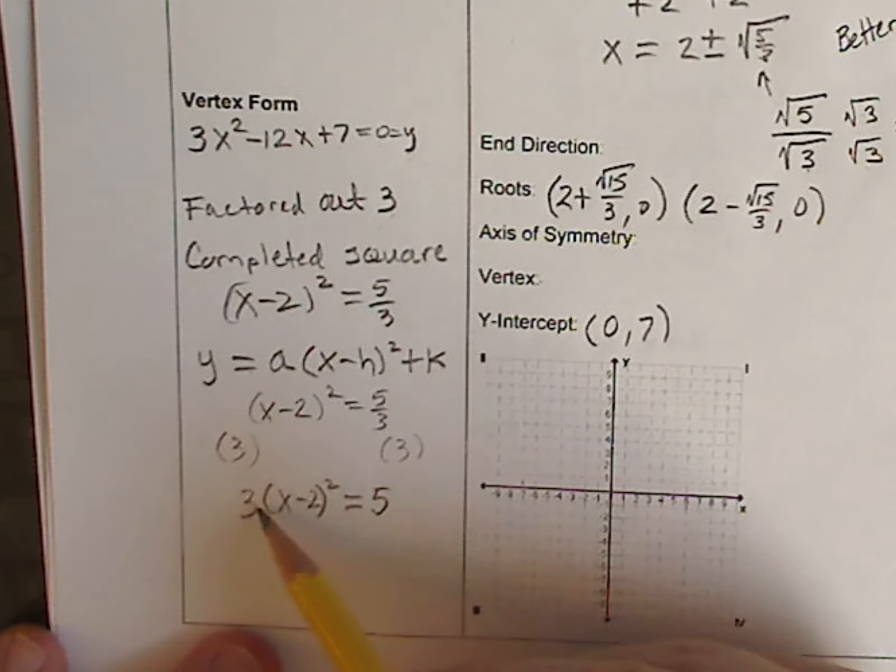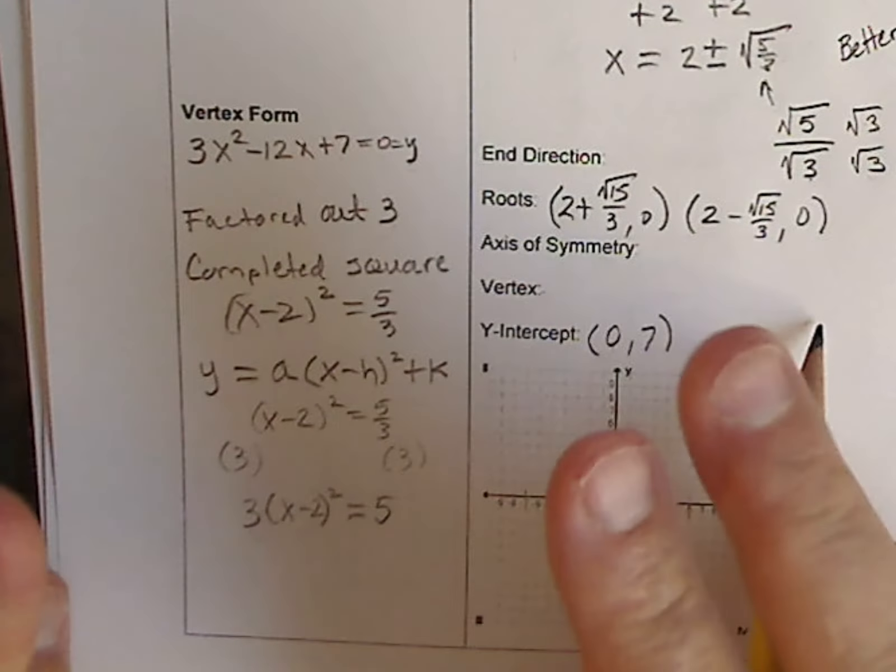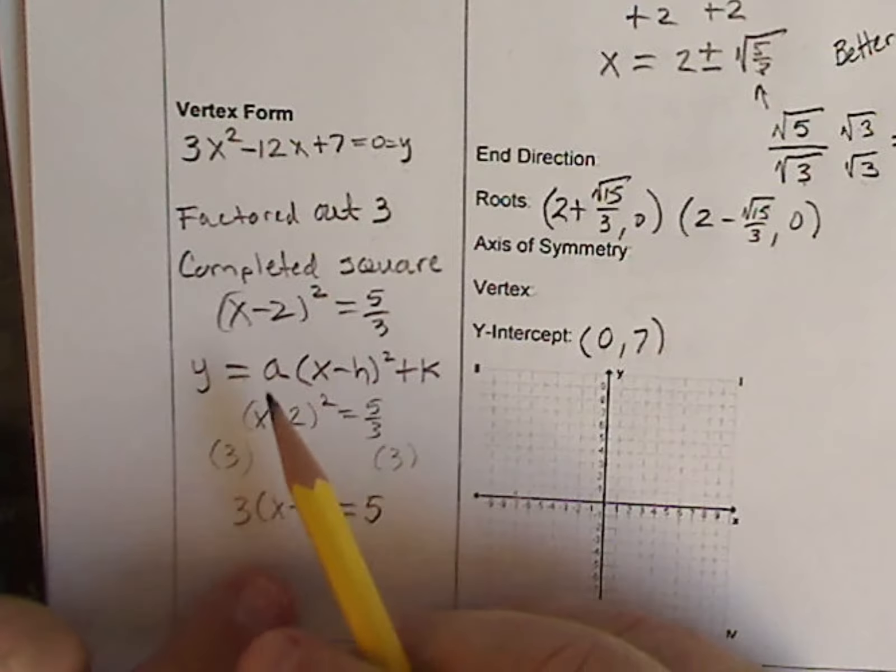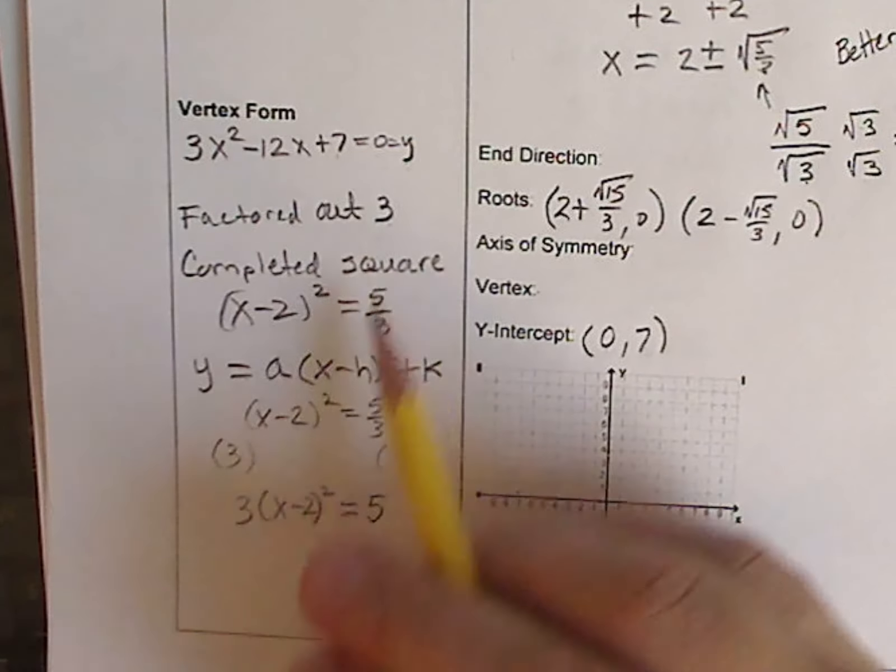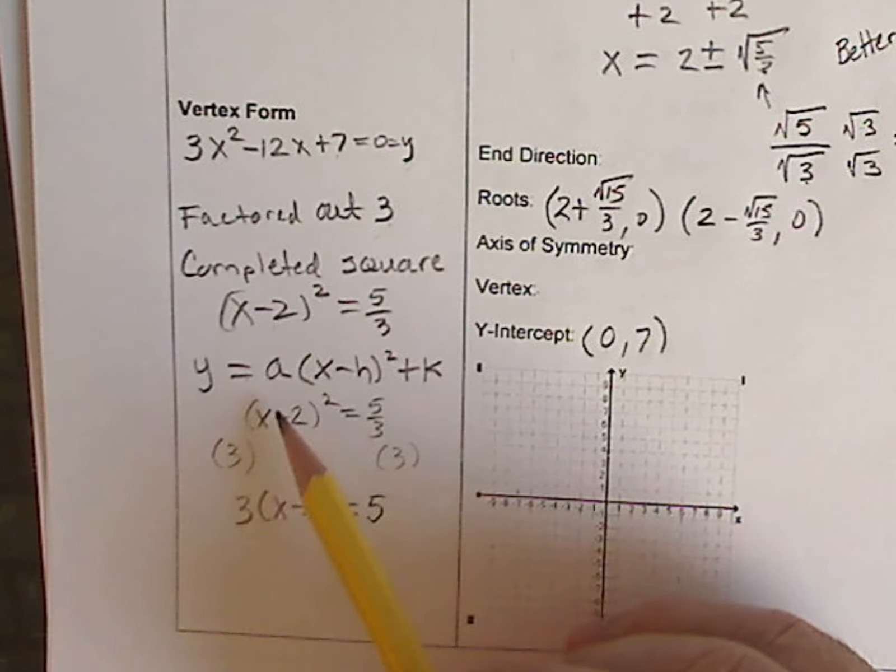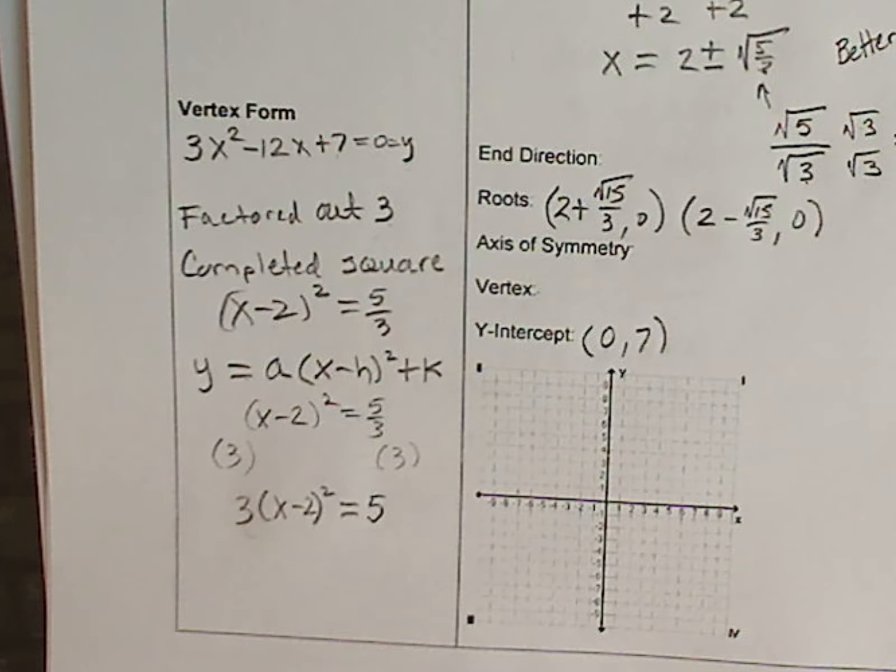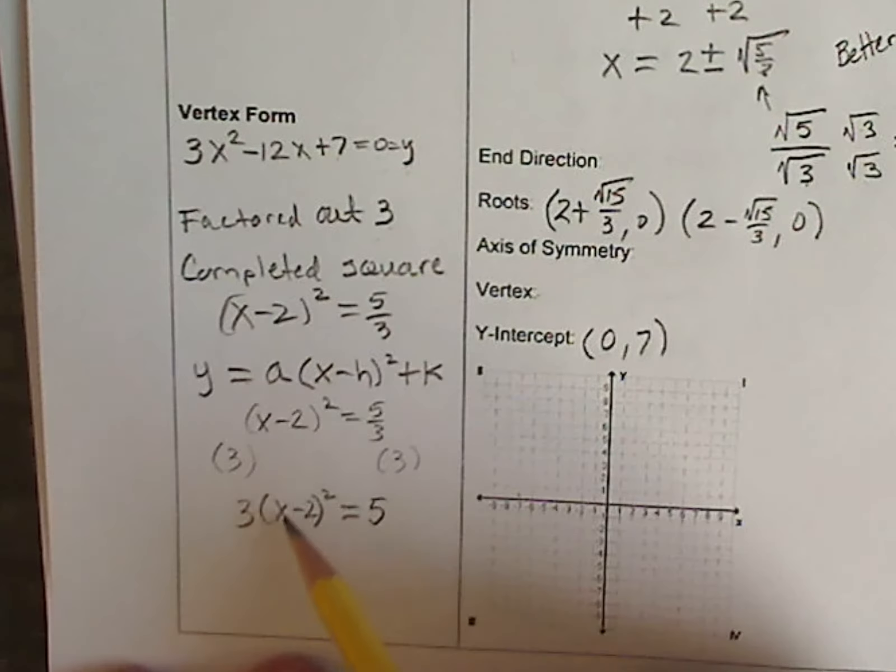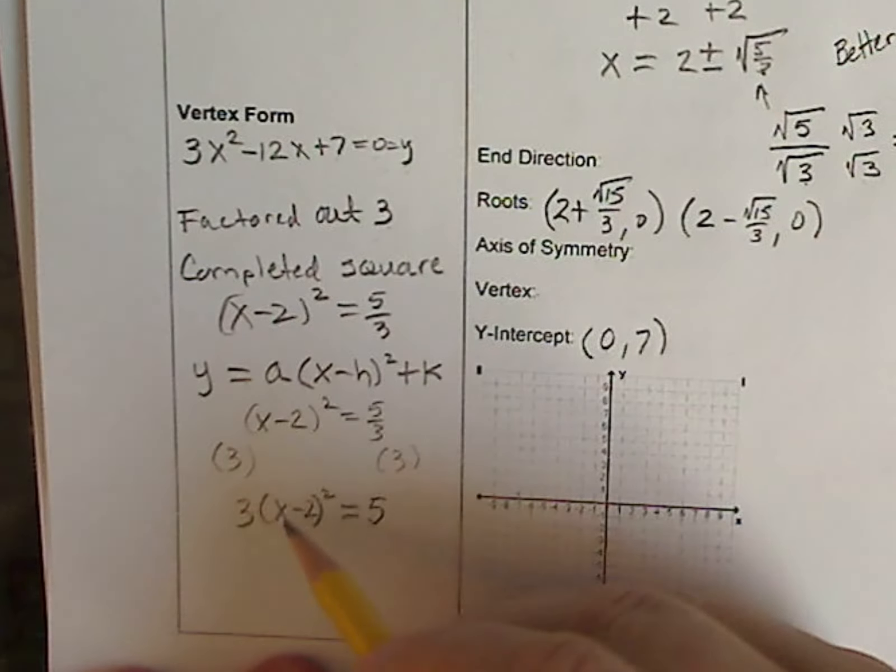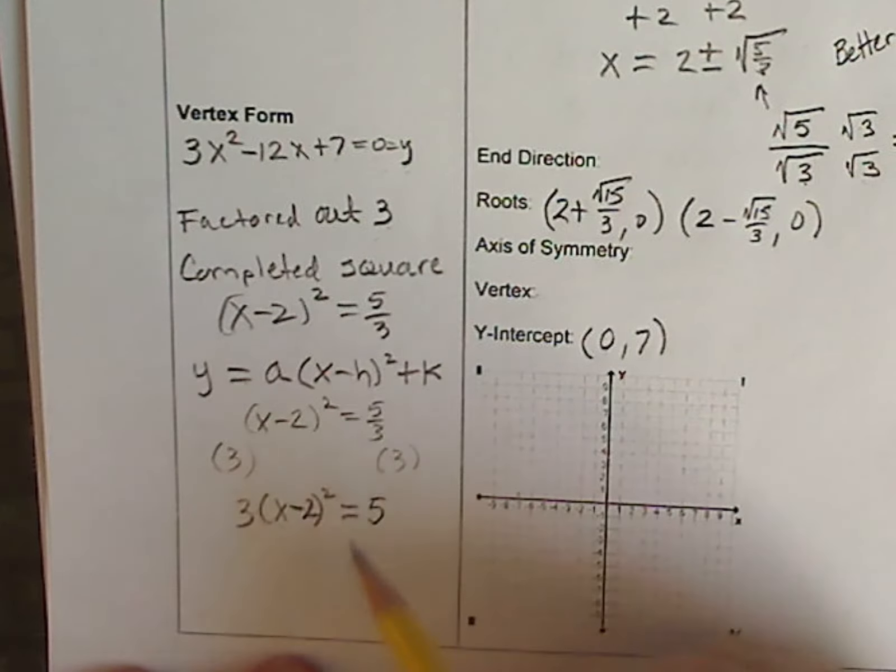There's our a, and even if there wasn't an a in the factor-out number, had there not been anything to factor out, our a would just be the identity of 1. Here's my x, here's my h. Again, if this had been a positive, it would just mean that a negative times a negative was a positive. And it's squared, and it equals 5.